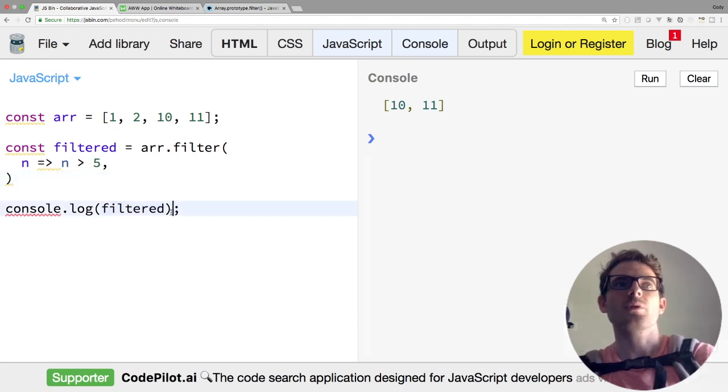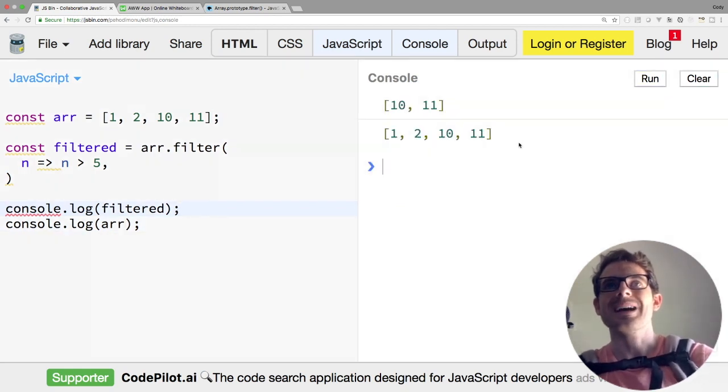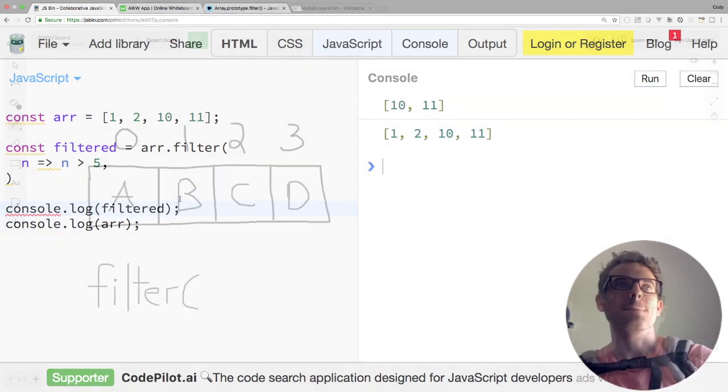And if we wanted to print out the original array as well, I'll just do that right underneath. Notice that the original array is not affected in any way. All right, so the second thing I kind of want to demonstrate is how do you use those additional arguments that are passed to your callback?